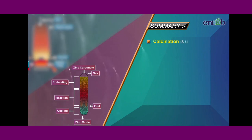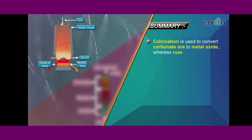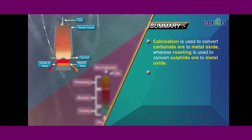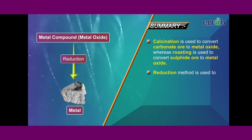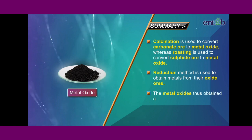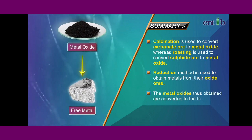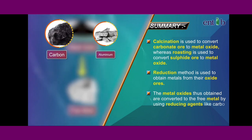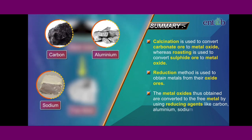Calcination is used to convert carbonate ore to metal oxide, whereas roasting is used to convert sulfide ore to metal oxide. The reduction method is used to obtain metals from their oxide ores. The metal oxides thus obtained are converted to the free metal by using reducing agents like carbon, aluminium, sodium or calcium.